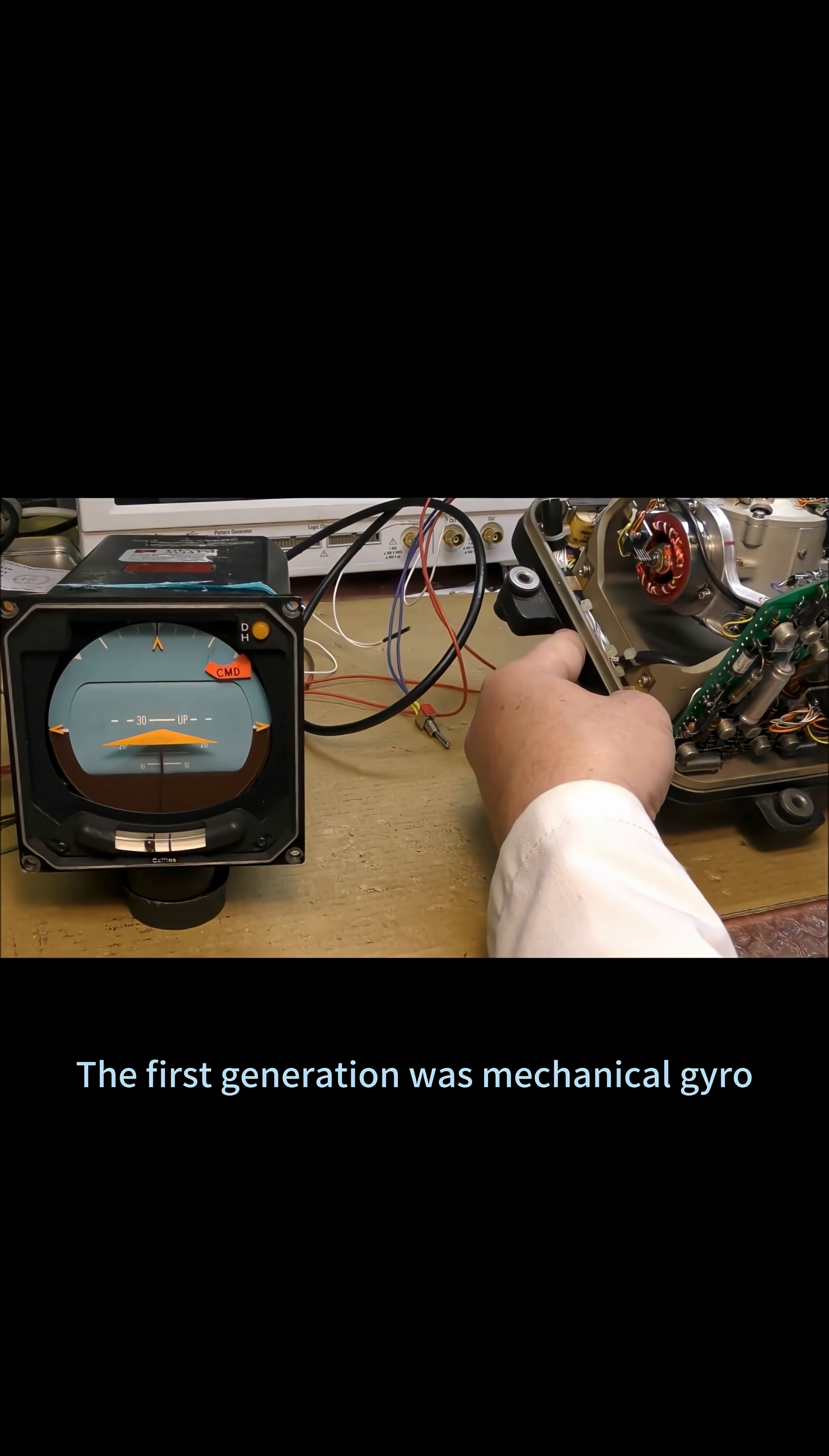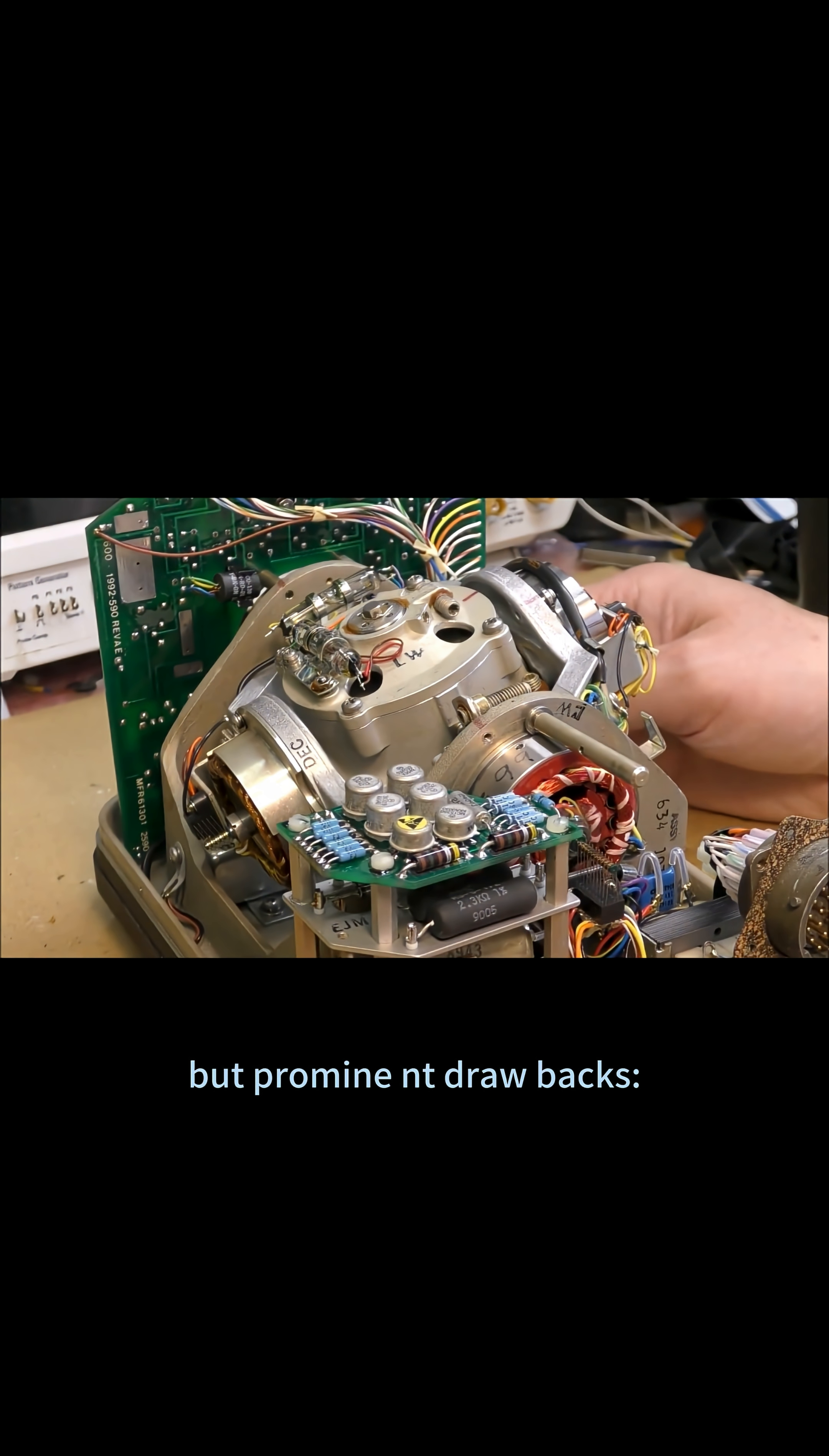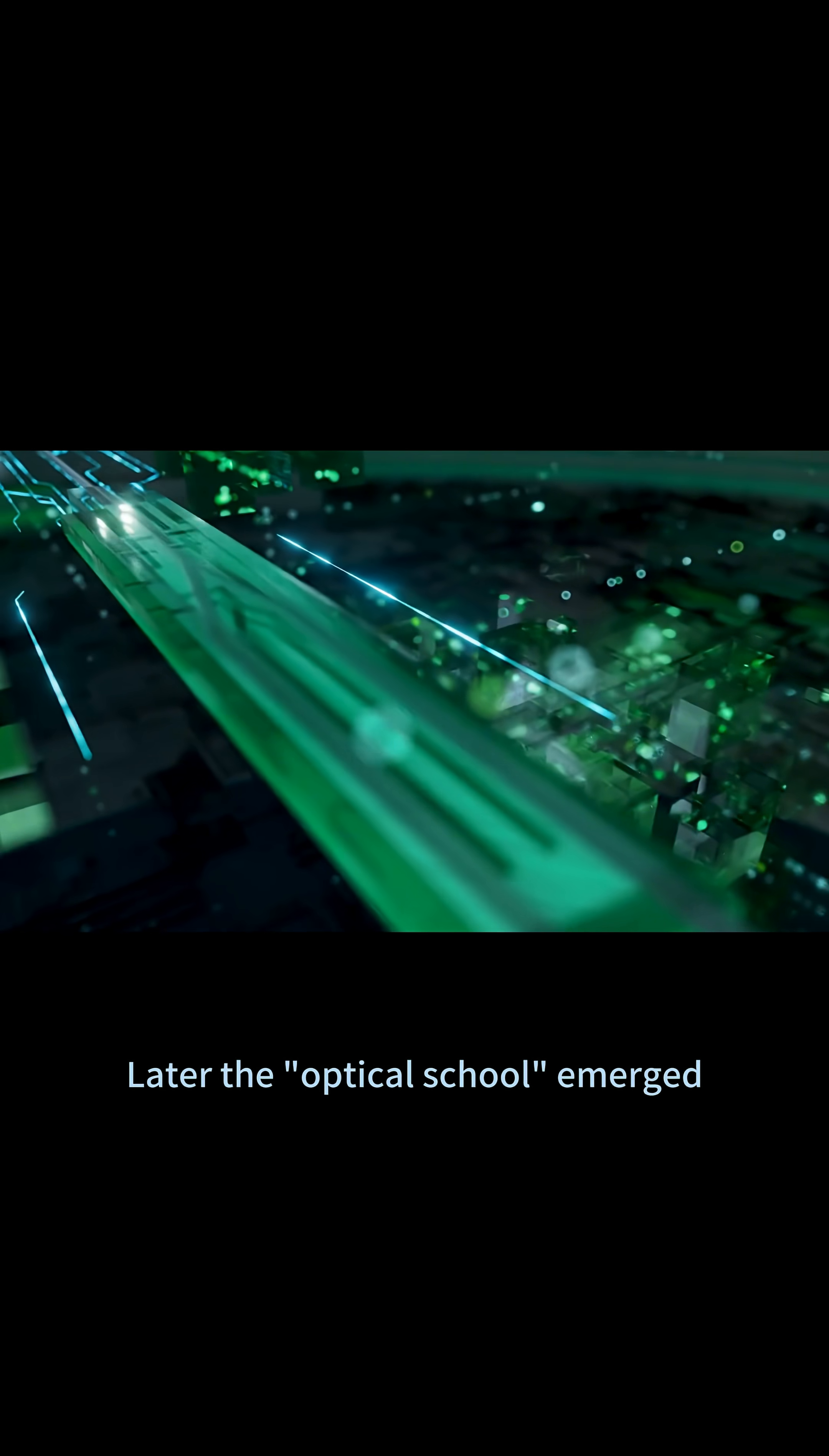The first generation was mechanical gyros, which were divided into two types: frame type and flexible type. It senses direction through a high-speed rotating mechanical rotor and oversized structure, featuring high accuracy but prominent drawbacks: large-size movable parts, susceptibility to underground vibration and shock causing data drift, and time-consuming alignment before each measurement.